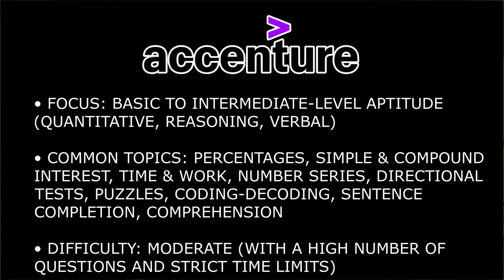Accenture is at a basic to intermediate level. The aptitude covers quantitative and reasoning sections. Common topics include percentages, simple and compound interest, time and work, number series, directional tests, puzzles, coding and decoding, sentence completion, and comprehension. The difficulty is moderate — not too hard, not too easy. However, Accenture has a higher number of questions with limited time compared to some other companies.